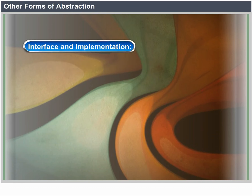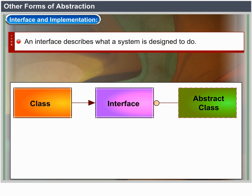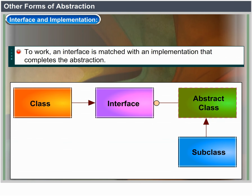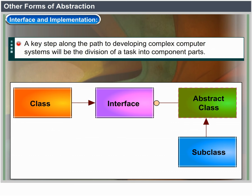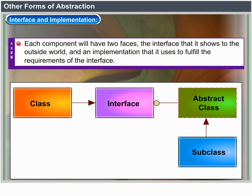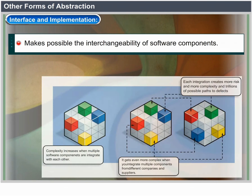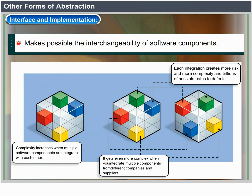Interface and implementation: An interface describes what a system is designed to do; it says nothing about how the assigned task is being performed. To work, an interface is matched with the implementation that completes the abstraction. Each component will have two phases: the interface that it shows to the outside world, and an implementation used to fulfill the requirements of the interface. This makes it easier to understand a design at a high level and makes possible the interchangeability of software components.